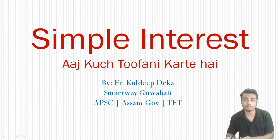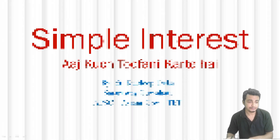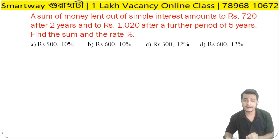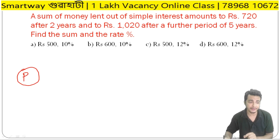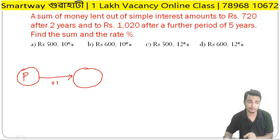Let us start with the first question. A sum of money lent out at simple interest amounts to 720 after two years.